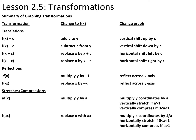For reflections, if you have a negative on the outside of the function, that's multiplying all your y-coordinates by negative one, so it's going to reflect you across the x-axis. If you have a negative inside, that's multiplying all of your x-coordinates by negative one, so it's going to reflect you across the y-axis.